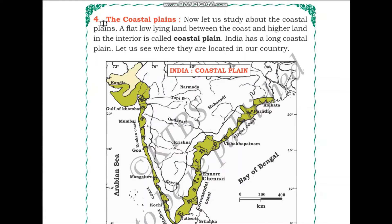Hello students, in this video we will be starting the coastal plains. In the previous video we learned about the peninsular plateau, now we will be learning about the coastal plains. A flat low-lying land between the coast and a higher land in the interior is called the coastal plain. In India, right next to the ocean, this flat low-lying land is part of the coastal plains.